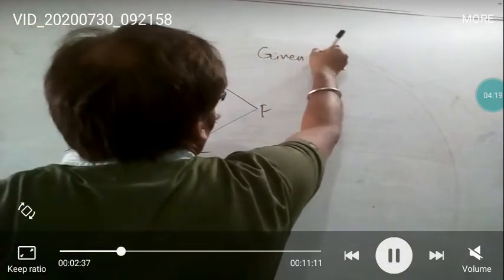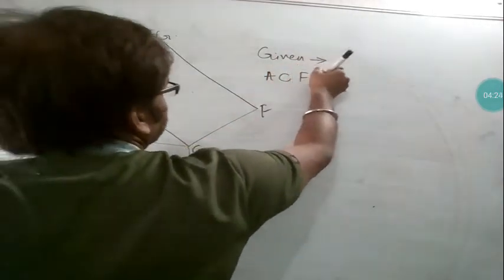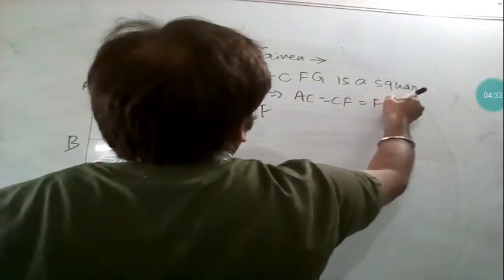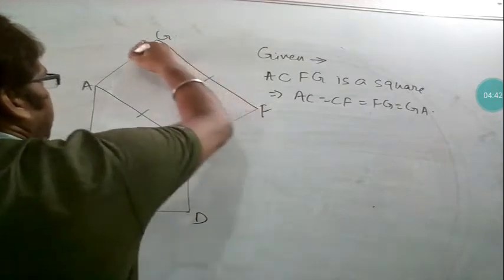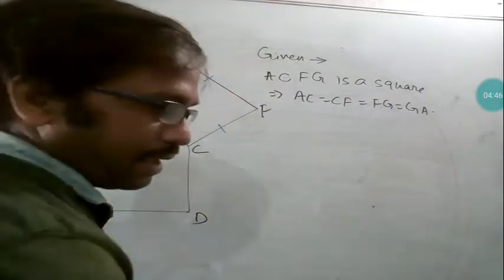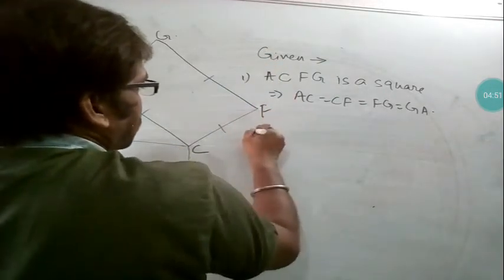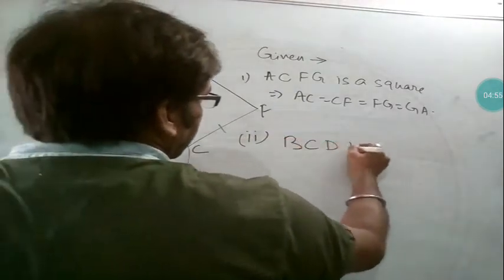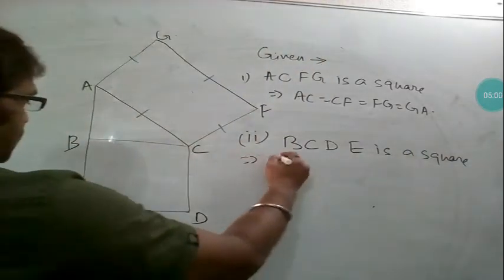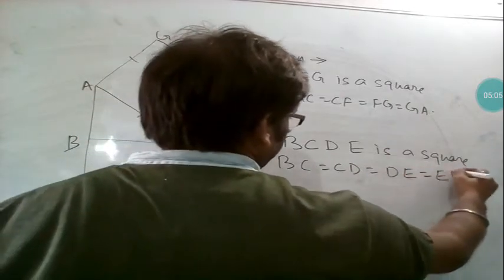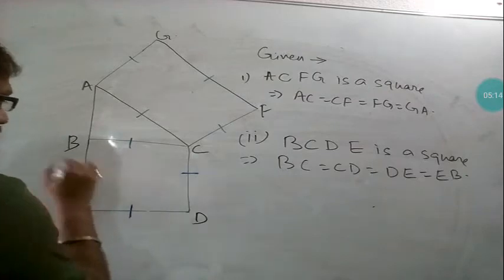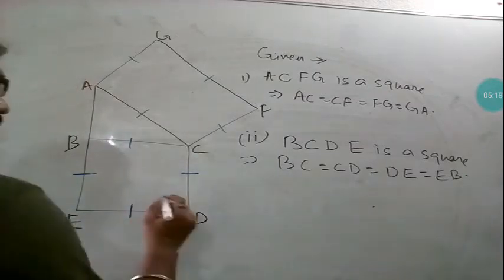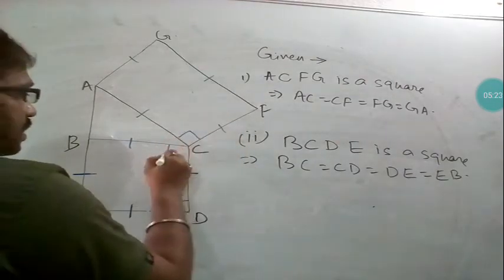First let me write what is given. They say ACFG is a square, so all sides are equal — obviously, it's a square. Then BCDE is also a square, meaning all sides are equal: BC = CD = DE = AB. These all sides are equal. And triangle ABC is already given with a 90 degree angle.